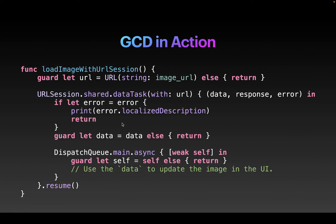When you submit a data task, in the background it communicates with the remote server and fetches data back. When the process is done, it executes the closure you passed in. You can check the error, grab the optional data, unwrap it, and use it — for example, to update the UI. Since all UI updates must happen on the main thread, you use DispatchQueue.main to push those tasks to the main thread.